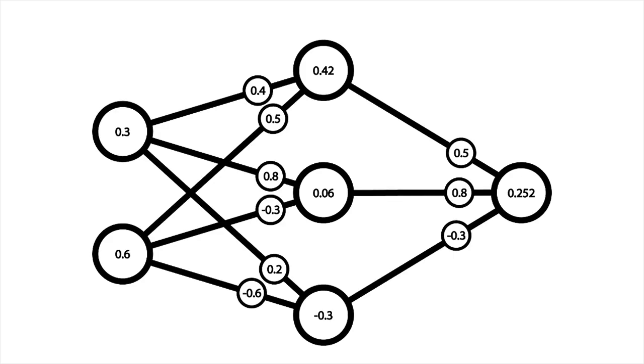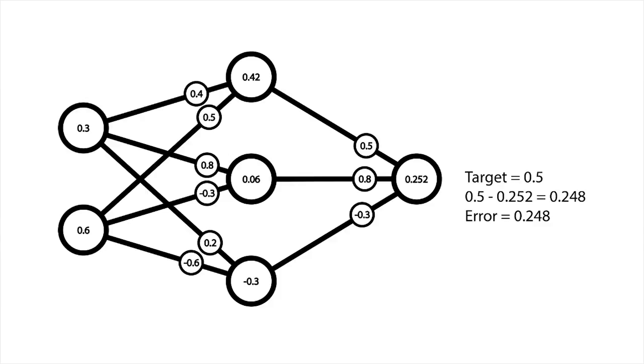I'm going to assume we've already done the forward propagation part and go from there. In this network, all values are abstract. So to start with, we evaluate the error of the input.